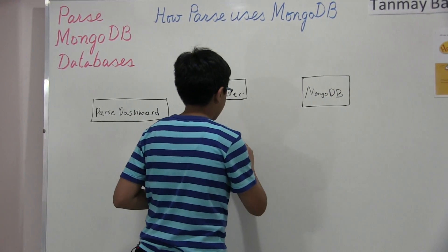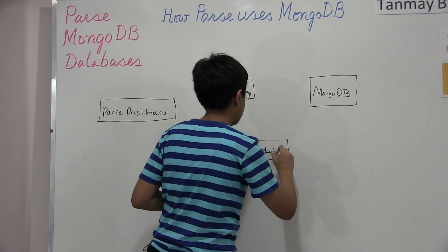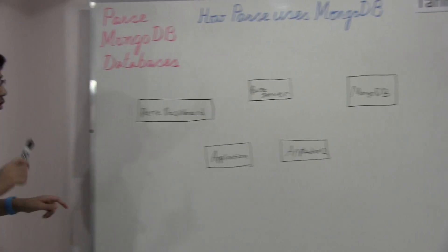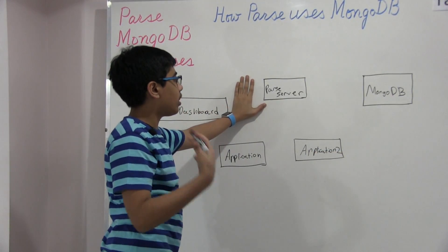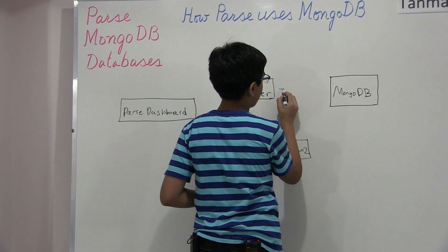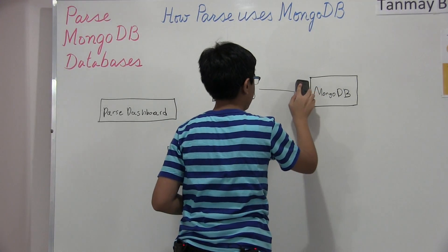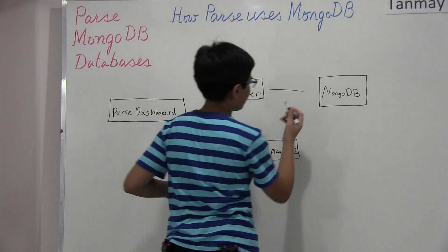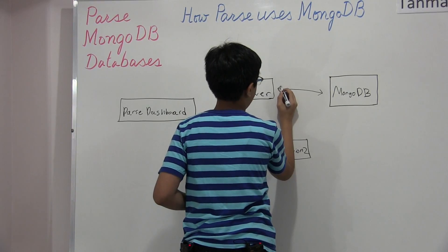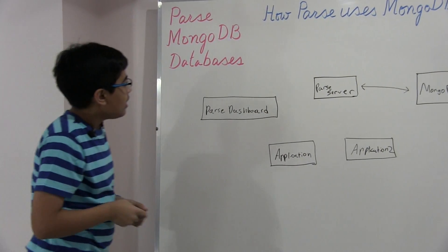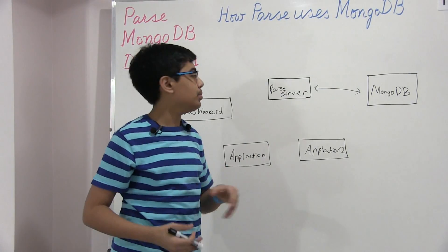Let's say we've got application one and application two — this will really help drive across the point. The point of Parse server is to have this communication protocol to and from MongoDB. We're going to have this communication protocol between Parse server and MongoDB, through a regular MongoDB connection just like how you would implement it in your applications. MongoDB can communicate back to Parse as well. The Parse server will provide a REST API, and that REST API can then be used with MongoDB and your applications.